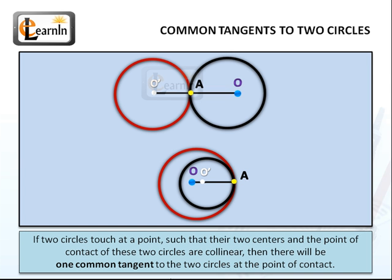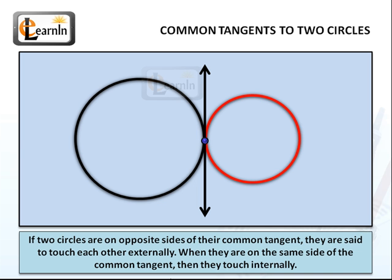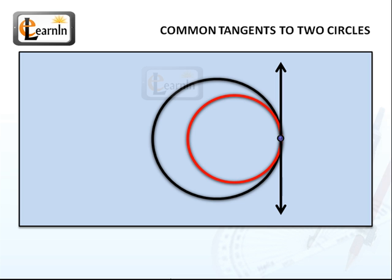If two circles touch at a point such that their two centers and the point of contact are all collinear, there will be one common tangent to the two circles at the point of contact. So if two circles are on opposite sides of their common tangent, they're said to touch externally since one circle can't be inside the other. Similarly, when they're on the same side of the common tangent, they touch internally since one circle is inside the other.